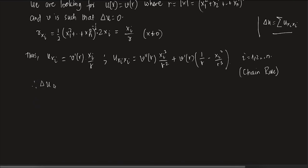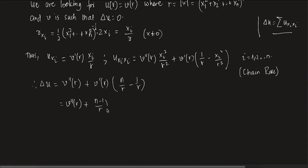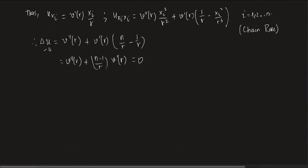Therefore, the Laplacian of U equals the sum from i=1 to N of U_{X_i X_i}. Summing up: the X_i^2/R^2 terms sum to 1, giving V''(R). The remaining terms give V'(R) · (N/R − 1/R) = V'(R) · (N−1)/R. So Laplacian of U = V''(R) + (N−1)/R · V'(R) = 0, since U is harmonic.